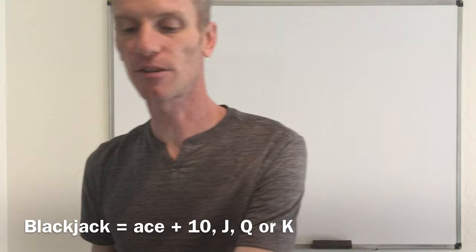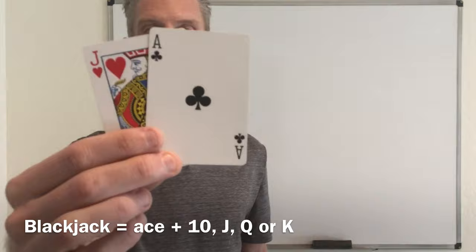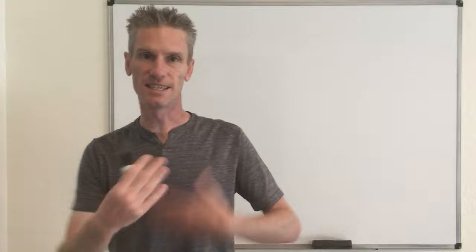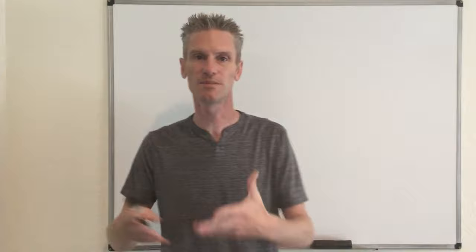So a blackjack means any combination like, for instance, a jack and an ace — that's a blackjack. To compute the probability of a blackjack we use basically the same technique as for poker probabilities, but it's in fact even easier because we take only two cards.